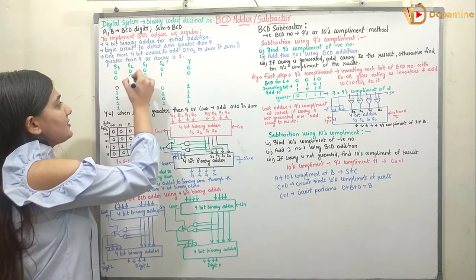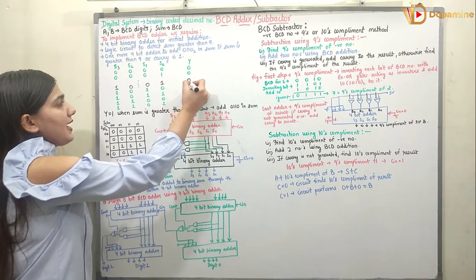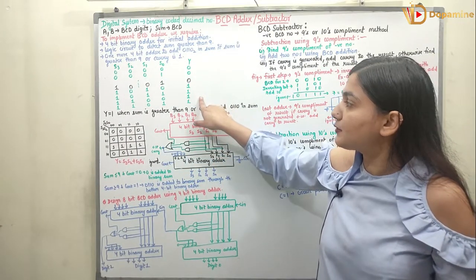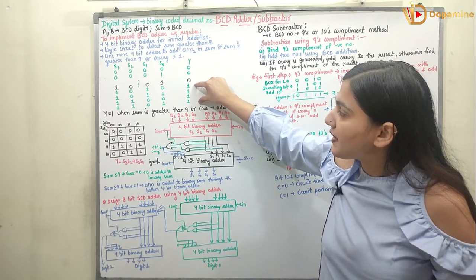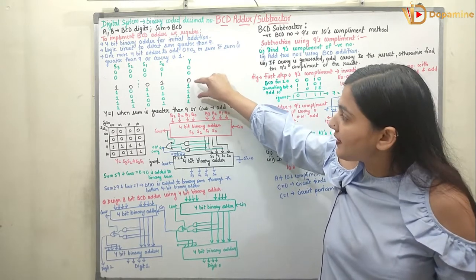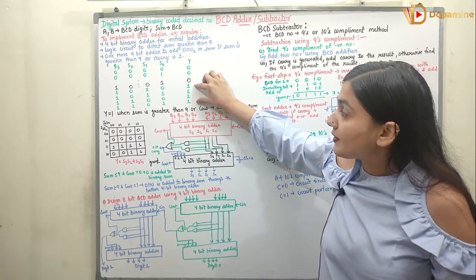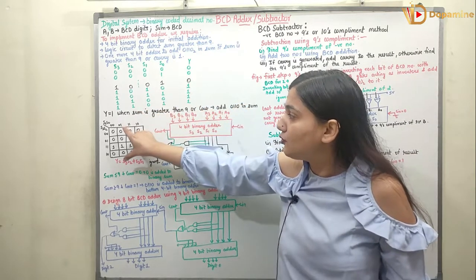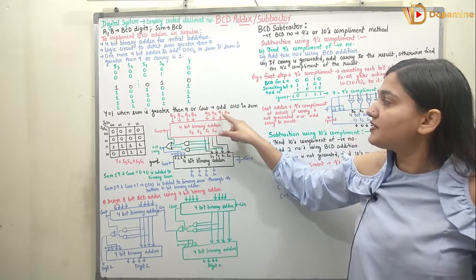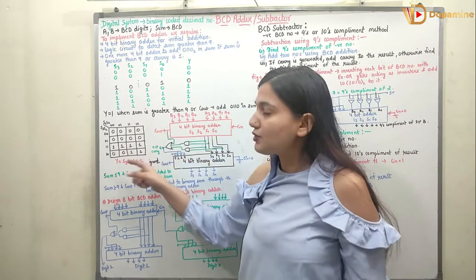What is 9? 9 is 1001. Up to 9, we have the output as 0, and after 9 — from 10, 11, 12 — we will get Y as 1. These are the invalid states whenever Y is equal to 1, so I have to avoid these states. How am I going to avoid them? Whenever we have these states I will add 6 to the output. I will check wherever Y equals 1, using a K-map. Y equals 1 when the sum is greater than 9 or whenever we have a carry out.